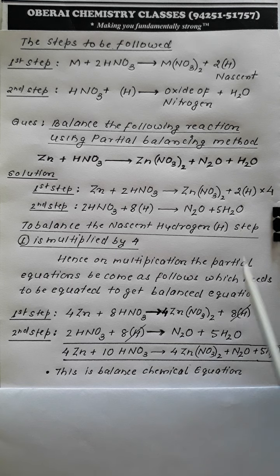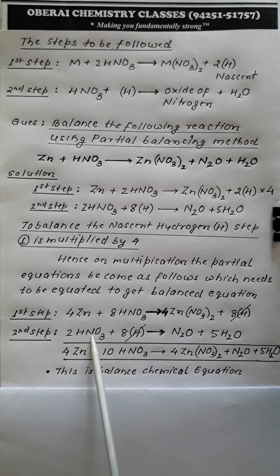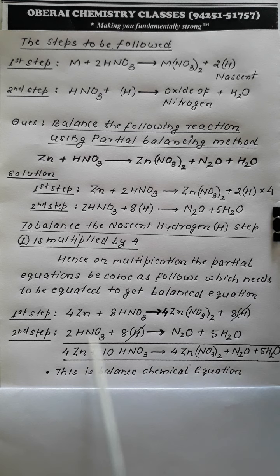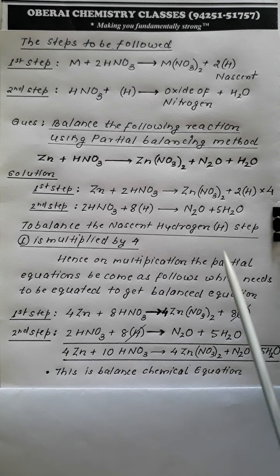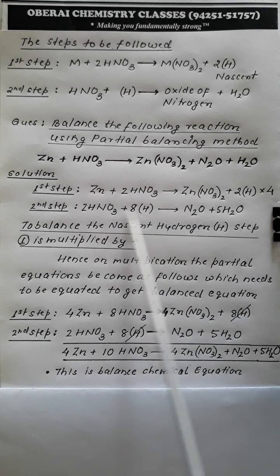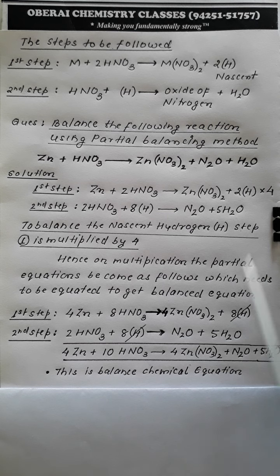The second step is kept the same — no multiplication needed. So the cross-balanced steps are: Step 1 (×4): 4Zn + 8HNO3 → 4Zn(NO3)2 + 8[H]; Step 2 (unchanged): 2HNO3 + 8[H] → N2O + 5H2O. The skeletal reaction was broken into two partial steps, individually balanced, and then cross-balanced by multiplying step one by 4.